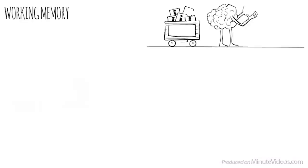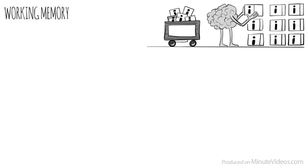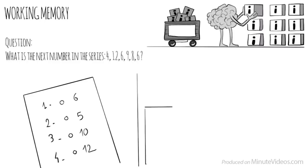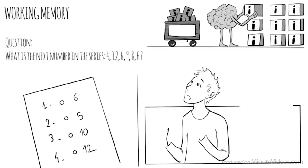The second section was about working memory, our ability to keep several chunks of information in our mind simultaneously. One of the questions was, what is the next number in the series? 4, 12, 6, 9, 8, 6. There were four options: 6, 5, 10, or 12.